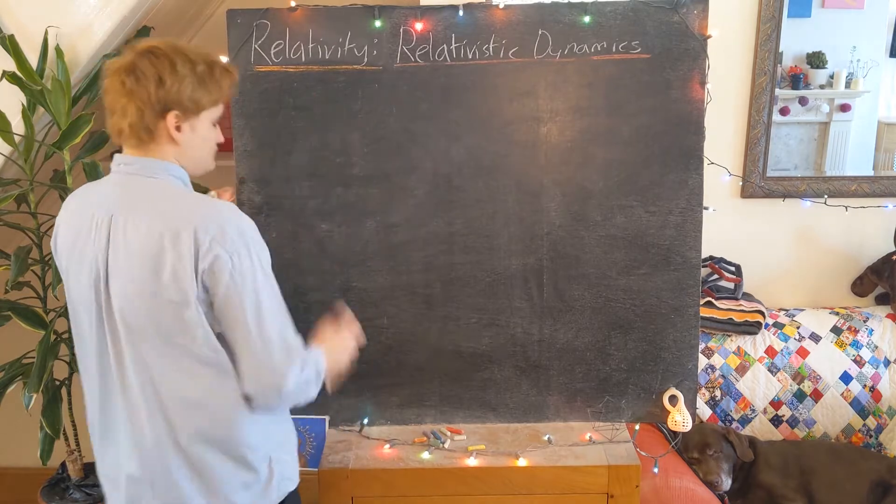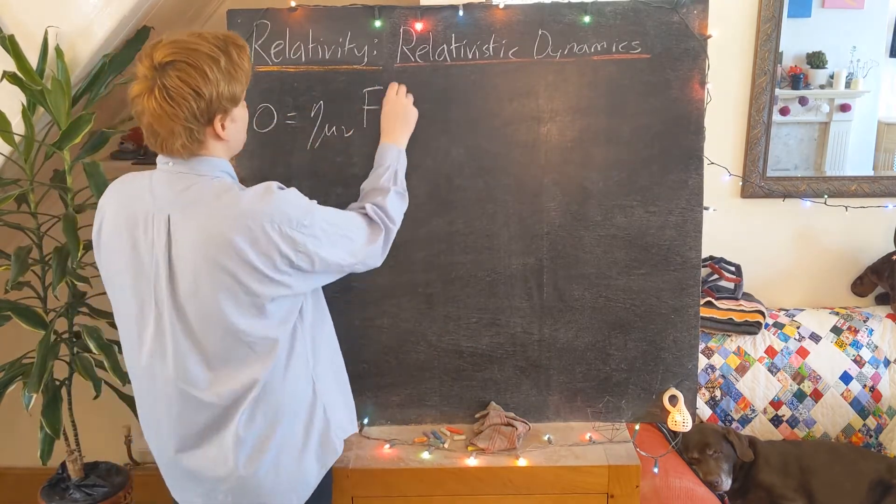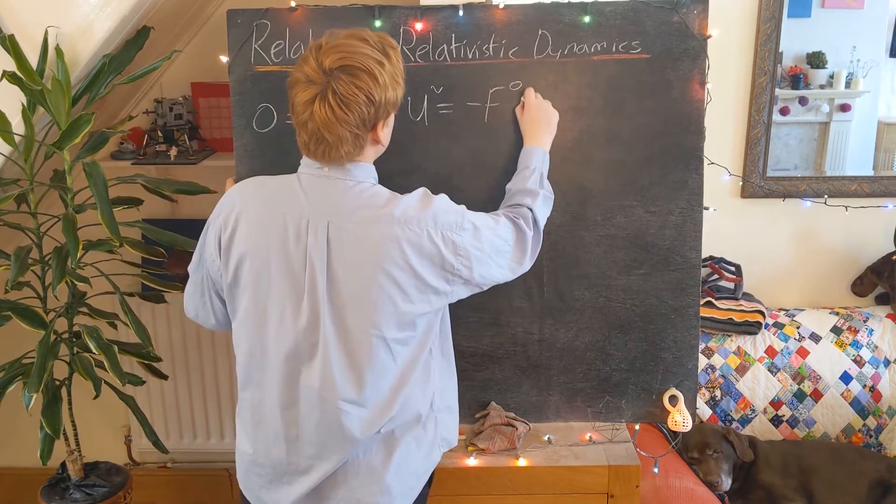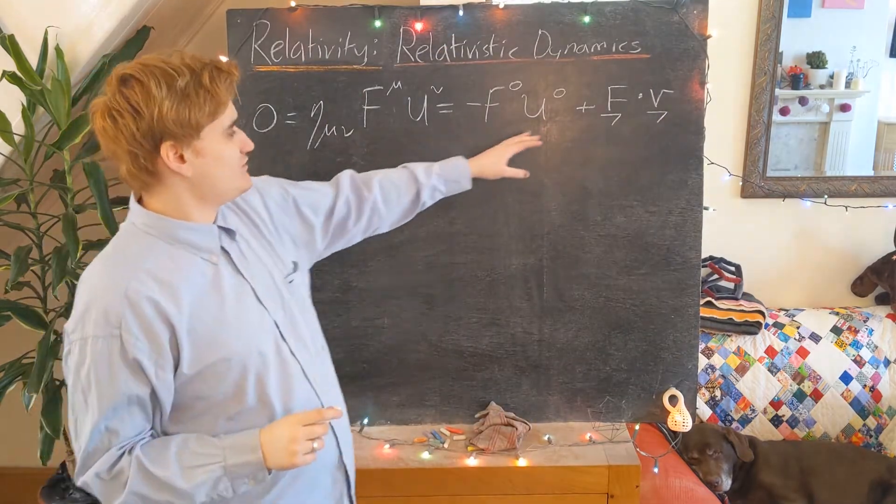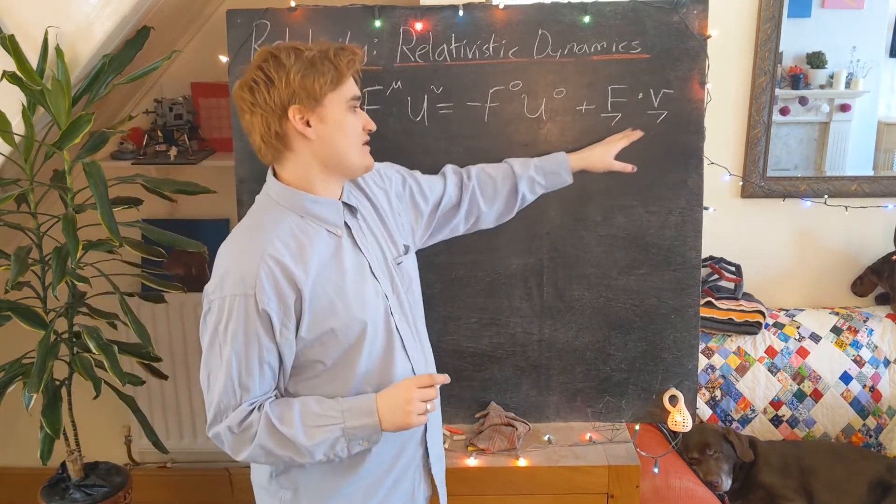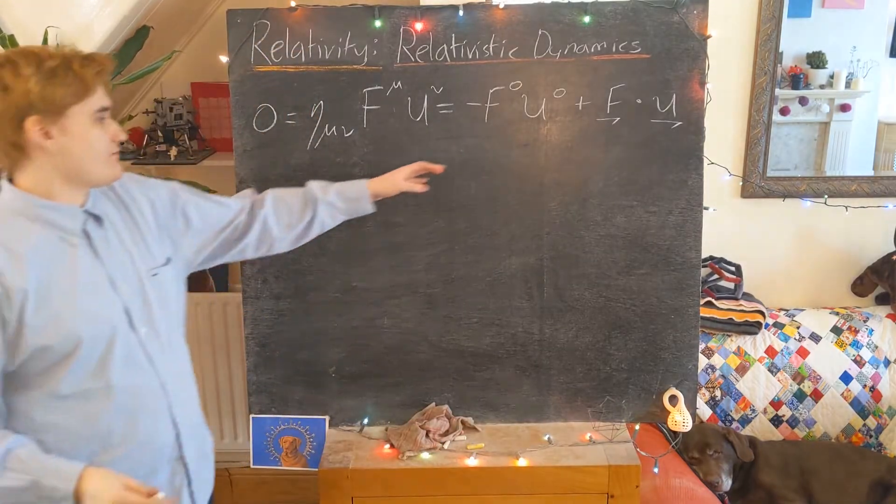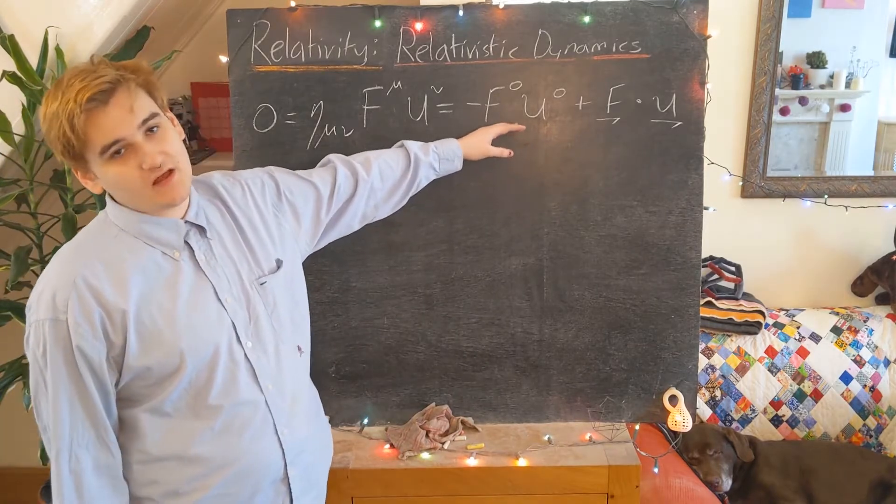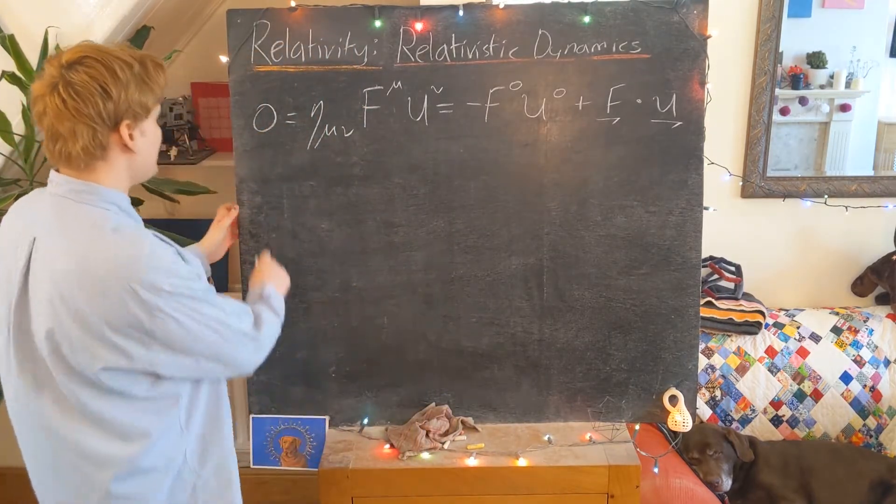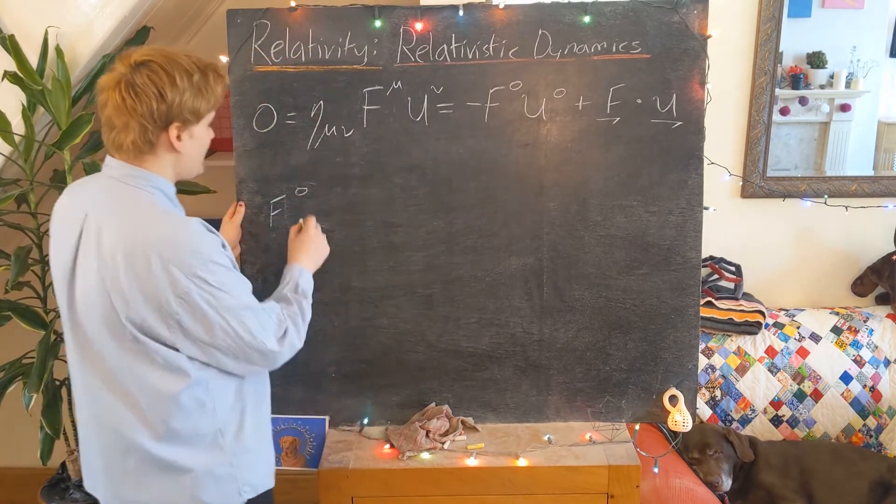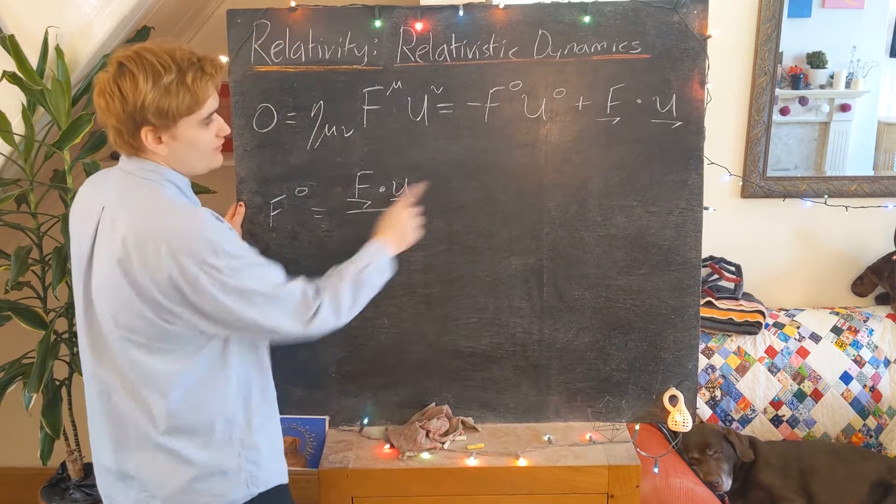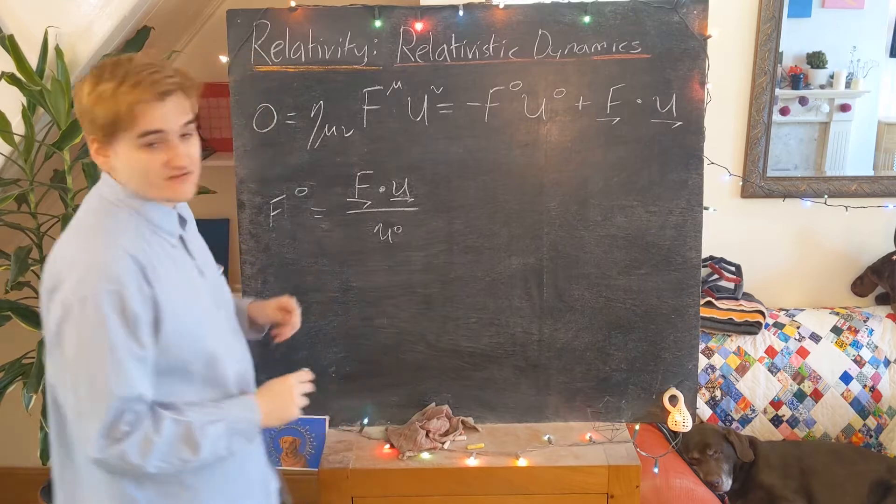So I'm going to use that now. I'll express this inner product of the force with the velocity. I'm writing out the terms where now I've expressed the first time component and then the other three spatial pieces, using this vector notation for the spatial pieces. This is just the Minkowski inner product. We have minus the time-like piece and then plus the space-like piece. I can now use the fact that this equals zero to just rewrite.